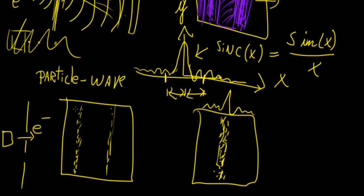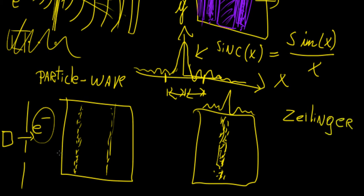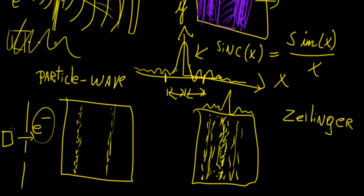This led people to believe that electrons were also behaving as waves, giving rise to the theory of wave-particle duality. And this is not only valid for electrons — Zeilinger and a team of researchers in the 1980s did a very similar double-slit experiment using cold neutrons, and they found exactly the same interference pattern on the screen.